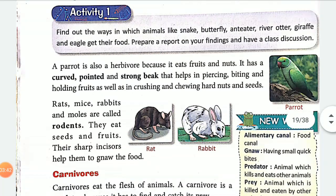The parrot is also a herbivore because it eats fruits and nuts. Its beak is strong and curved, which helps it cut, chop, and crush fruits. The parrot uses its strong curved beak to break open nuts and seeds.